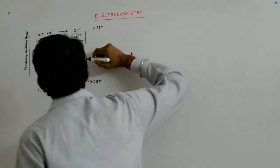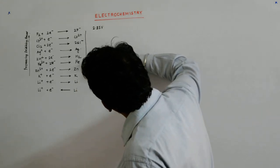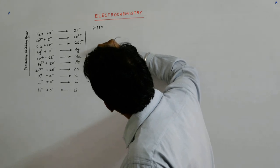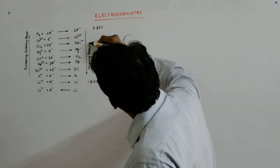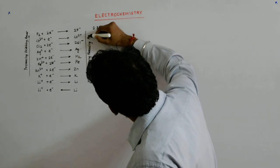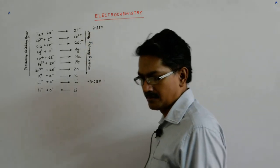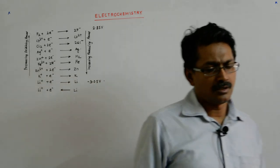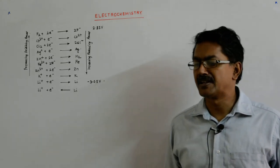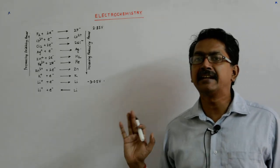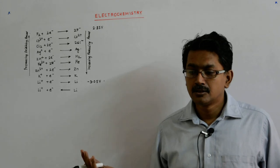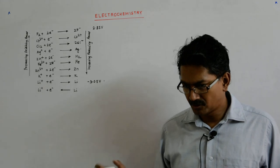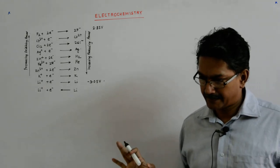These are increasing reducing power. Correct? So, it gives you a great amount of information and that will become very handy when we are actually doing the organic chemistry and going through the equations. So, this has to be kept in mind. Fine?